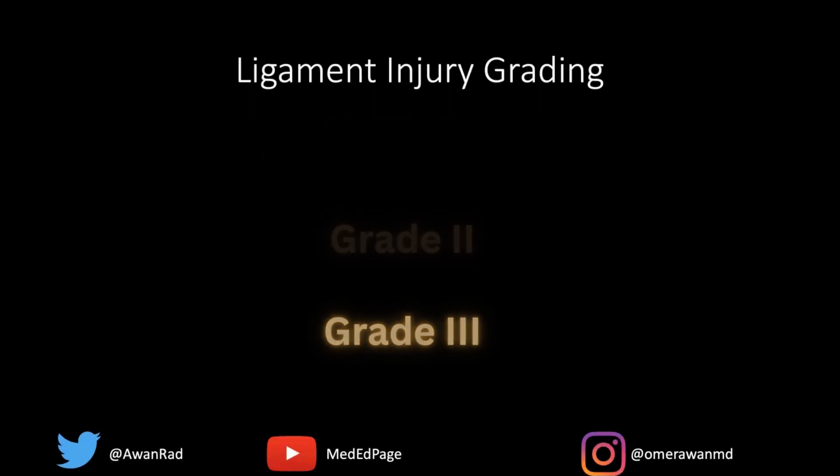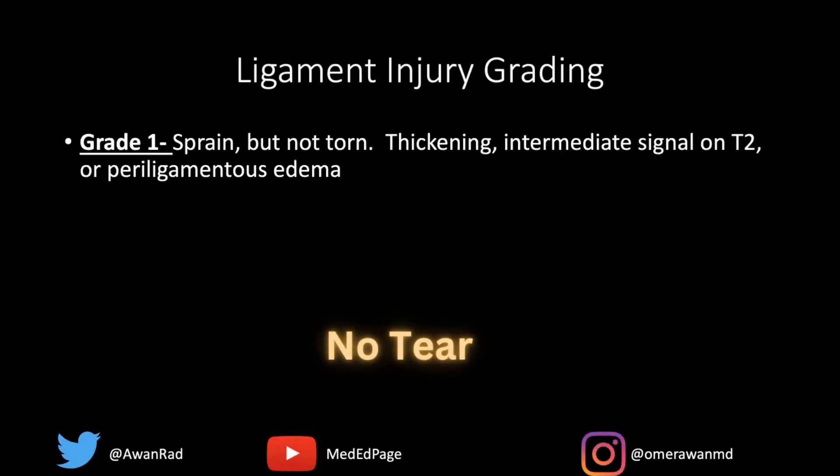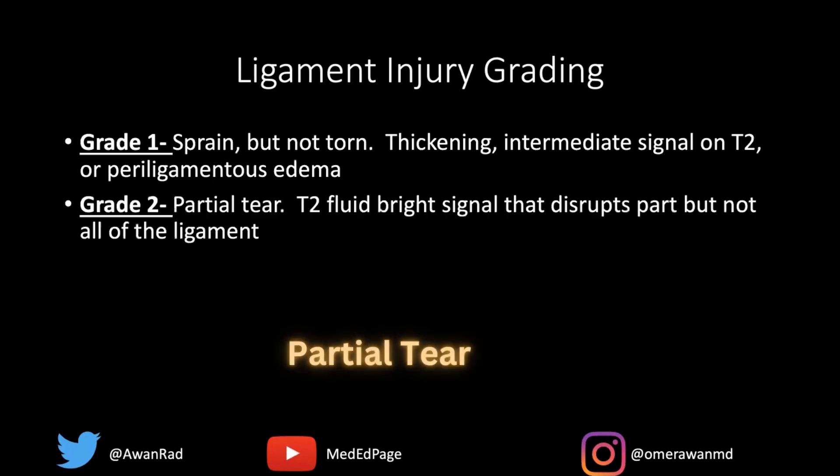Ligament injury is graded as grade one, grade two, and grade three on MRI. A grade one injury is when it's not quite torn but sprained — usually the ligament is thickened, there's intermediate signal that's not quite T2 bright, and there may be edema around the ligament, but the substance and fibers of the ligament themselves are intact. A grade two is similar to what you saw in the index case — a partial tear — where T2 fluid bright signal disrupts part, but not all, of the ligament.